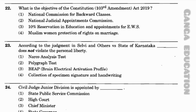Question number 22: What is the objective of the Constitution 103rd Amendment Act 2019? Option 1: National Commission for Backward Classes; option 2: National Judicial Appointments Commission; option 3: 10% reservation in education and appointments for EWS; option 4: Muslim Women Protection of Rights on Marriage. The correct answer is option 3 — 10% reservation in education and appointments for EWS.